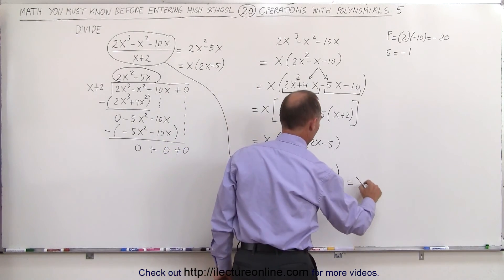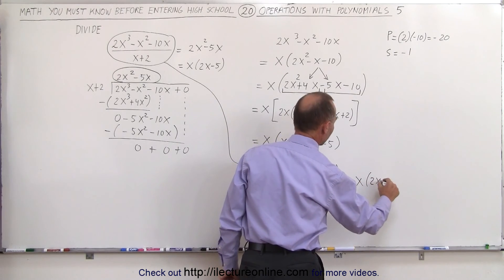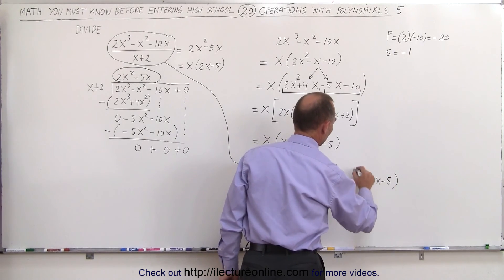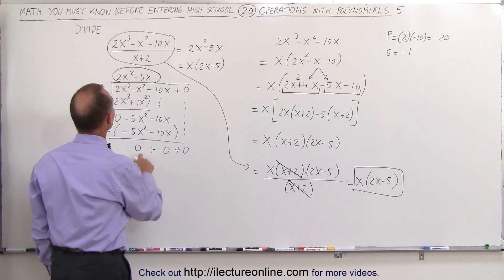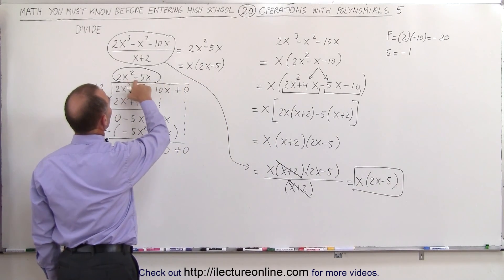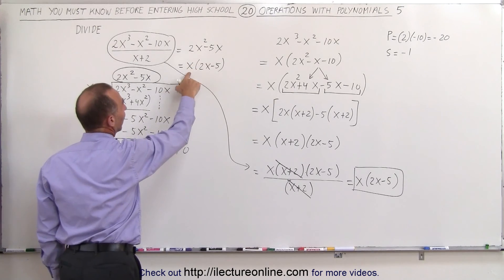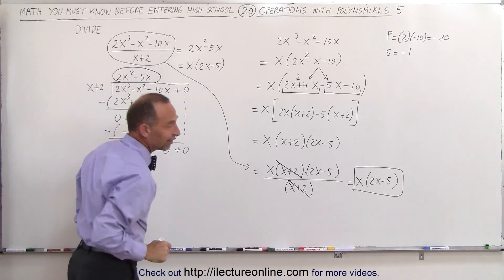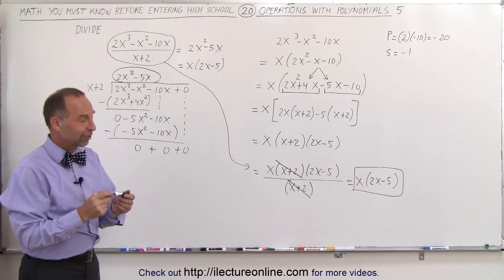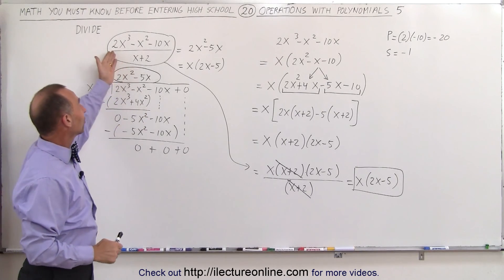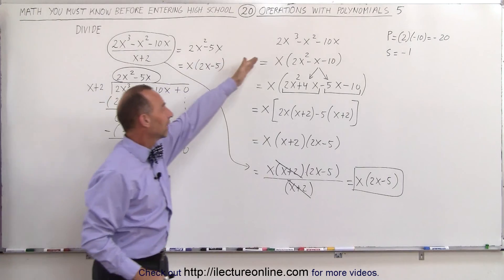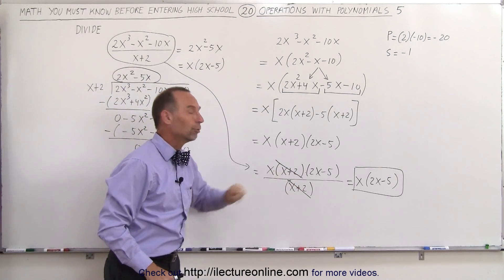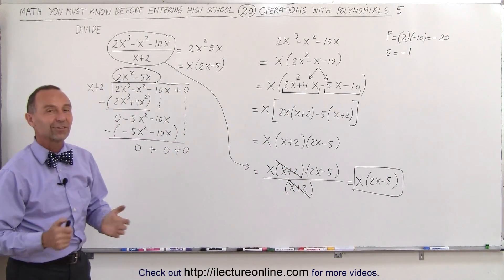This should be the very same result that we got when we did the longhand division, and here we have 2x² - 5x which can be factored to be x times (2x - 5), and you get the same result. So you can see that we can either do this by longhand division or we can do that by factoring the numerator and then dividing the denominator into the numerator. And that's how that's done.